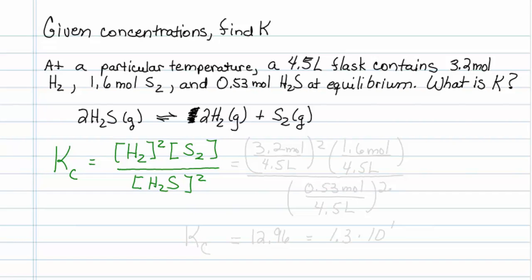Okay, now I can just substitute my values. So let's see, H2 is 3.2, that's my moles, over 4.5 liters. I'll have to square that. My S2 is 1.6 moles over my 4.5 liters, and my last value is 0.53 moles over 4.5 liters, and I need to remember to square that.